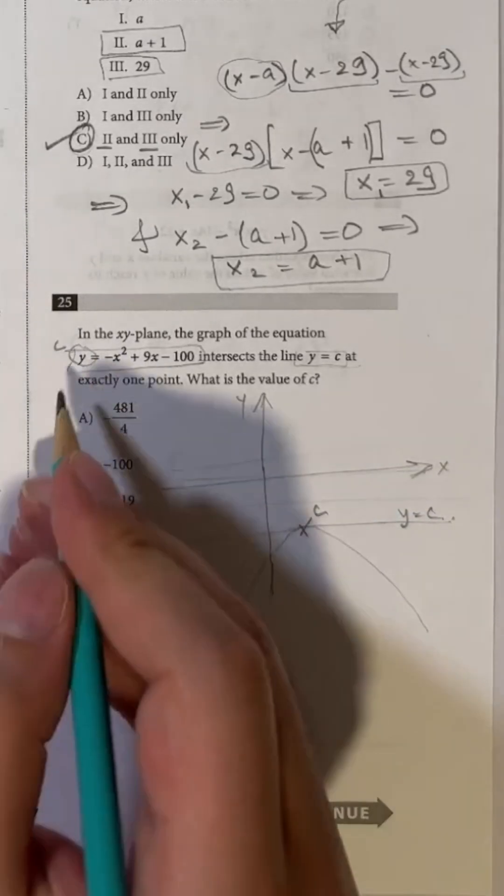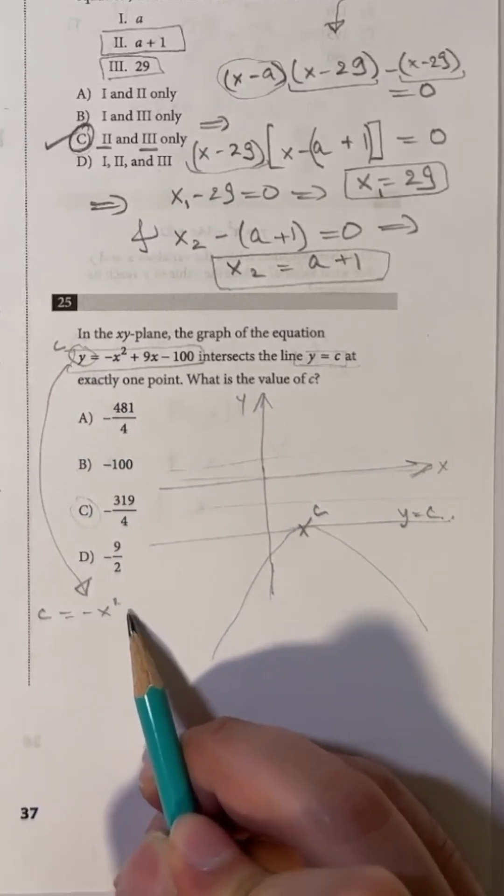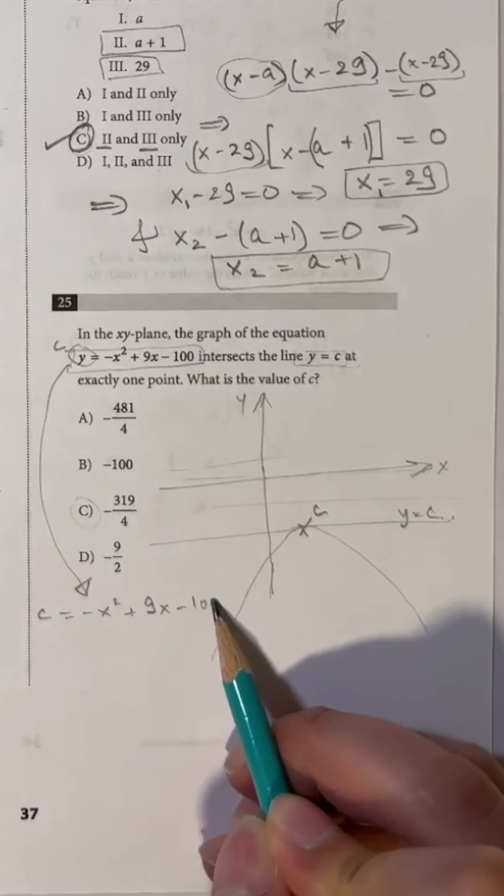And to find c, replace y with c in the equation of the parabola. c then equals minus x squared plus 9x minus 100.